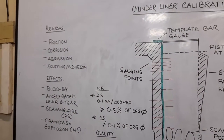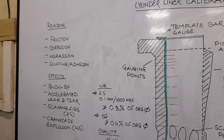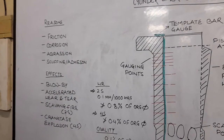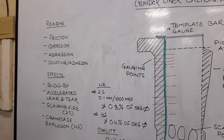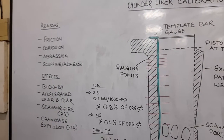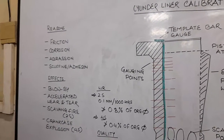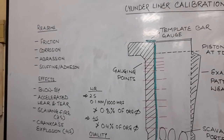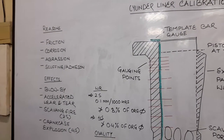This is the column gauge point. This cylinder liner will be fixed in the column. It's a typical column. If you're trying to use a column, it is the column.